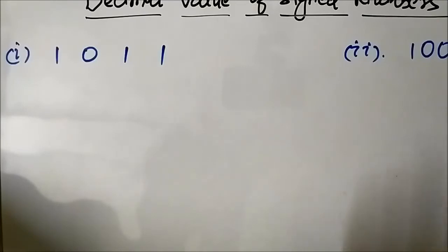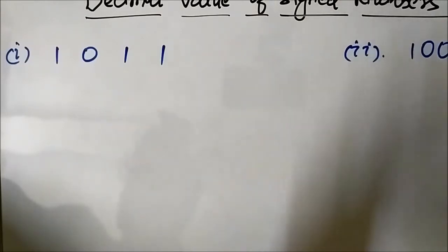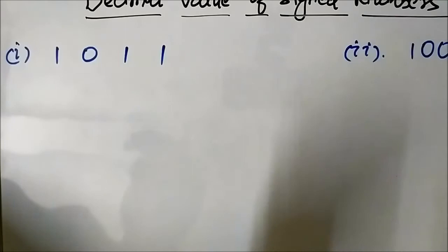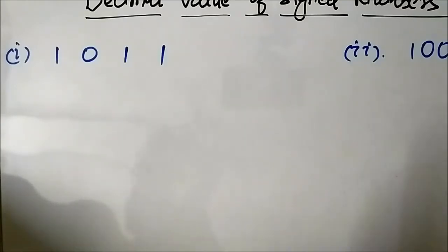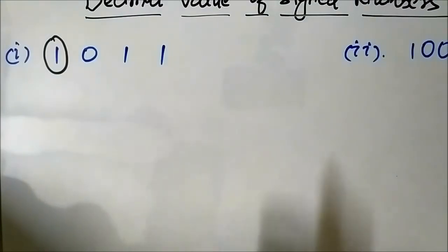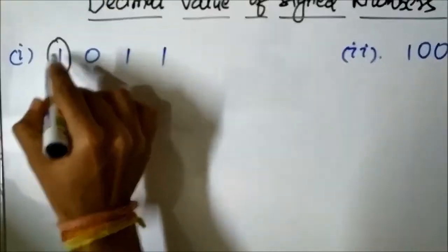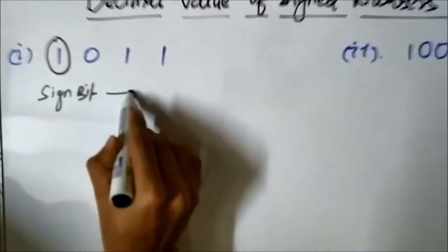Please check out the sign magnitude, 1s complement, and 2s complement representation videos — there are three separate videos on the channel so that you understand these concepts better. The first step is the examination of the sign bit, which is the extreme left bit or the MSB. When the sign bit is 0, it means the given number is positive, and when it is 1, it means the given number is negative. Here the sign bit is 1, so it means it is a negative number.